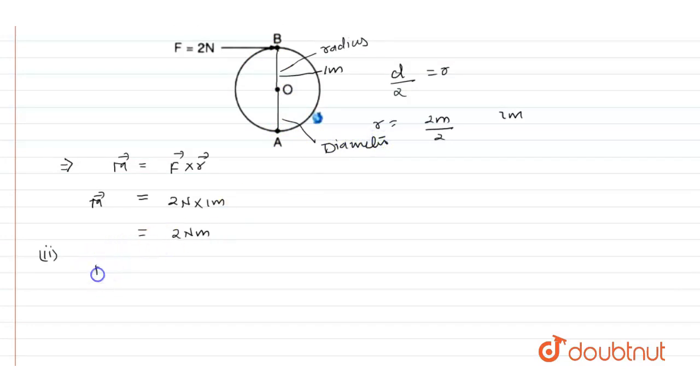We know that the moment of force is the product of force and the perpendicular distance. By substituting the values, we will get 2 Newton into 2 meters, and it comes out to be 4 Newton meter.